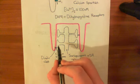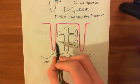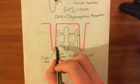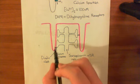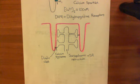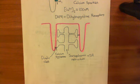The calcium is going to act effectively like a neurotransmitter — it's going to bind to receptors on the membrane of the sarcoplasmic reticulum and activate those receptors. So the calcium sparklet is going to activate receptors in the membrane of the sarcoplasmic reticulum, and we'll continue this discussion in the next video.